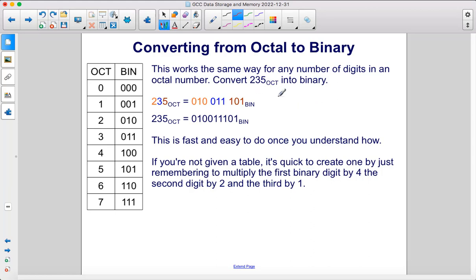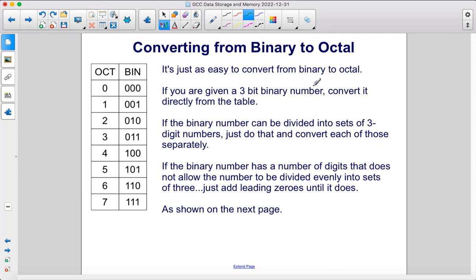This works the same way for any number of digits in an octal number. Let's convert 235 in octal into binary. 2 is 010, 3 is 011, and finally 5 is 101. This is fast and easy to do once you understand how. If you're not given a table, it's quick to create one by just remembering to multiply the first binary digit by 4, the second digit by 2, and the third by 1.